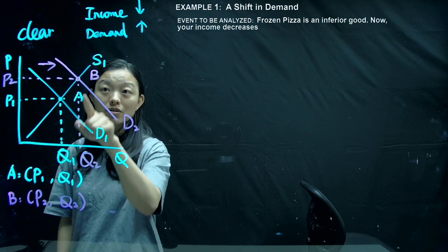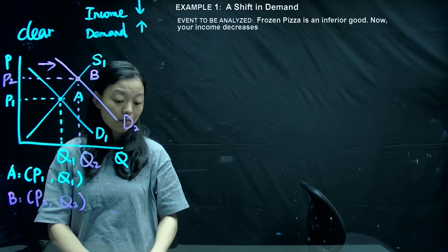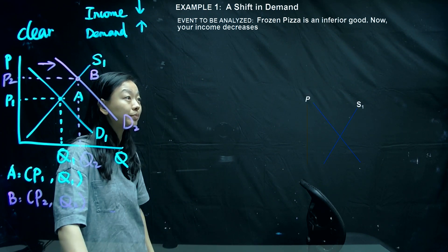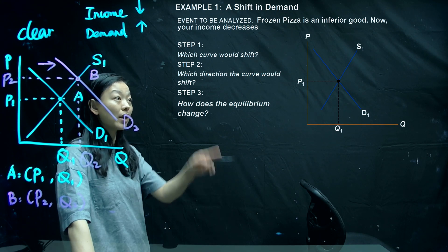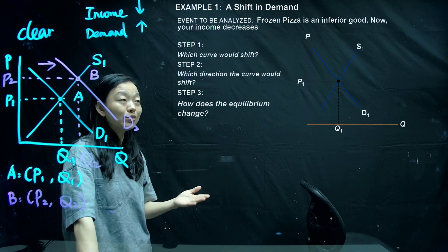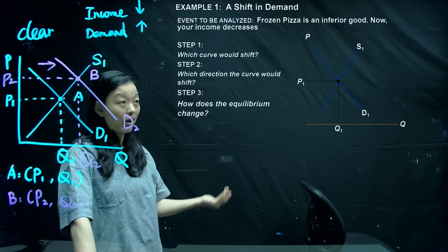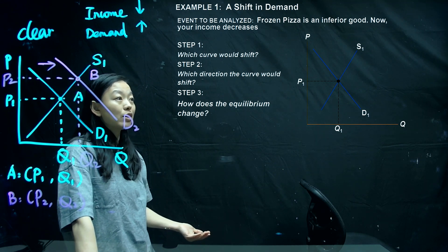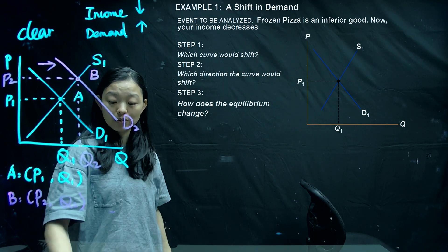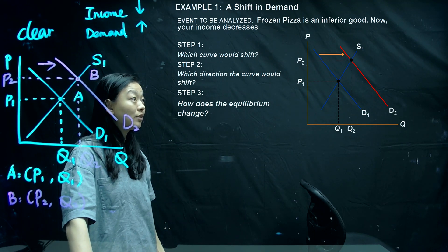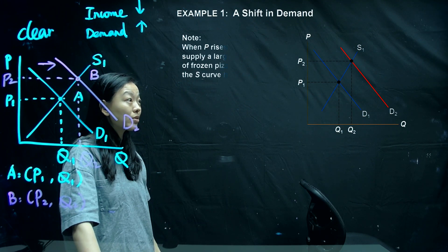So three steps: which curve shifts? The demand curve. To which direction? To the right-hand side. How does the equilibrium change? We have a higher equilibrium price and higher equilibrium quantity compared with point A.